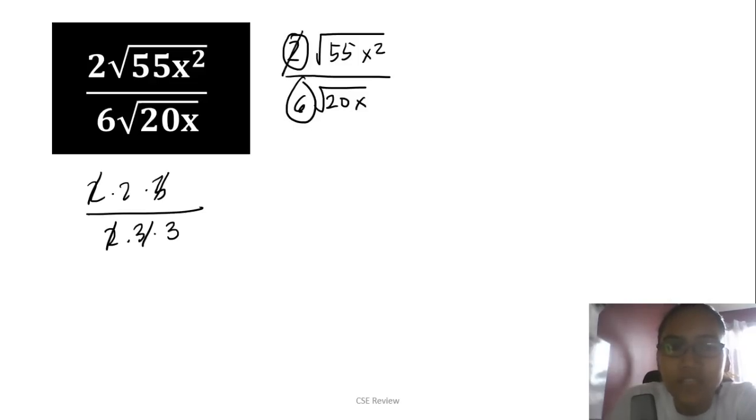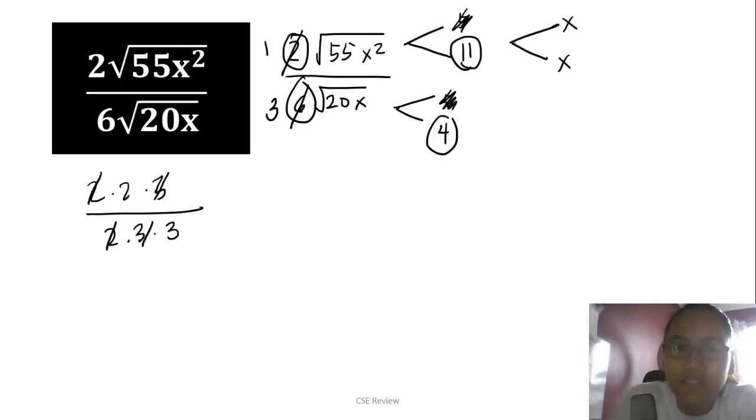You have 2√(55x²) over 6√(20x). Start with what's outside. The 2 and 6 cancel—2 becomes 1, dividing both sides by 2, this becomes 3. Now work on what's inside. Inside you have 5 and 11. Here in 20, you have 5 and 4. Since there's 5 in the numerator and 5 in the denominator, we can erase them. What's left is 4 and 11 on the digit side. For the x side, you have x and another x, so two x's. Here you have just 1 x. So we divide and cancel. Whatever's in the numerator that's also in the denominator, we erase.